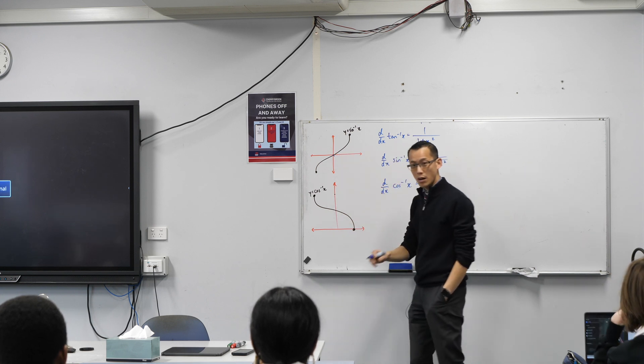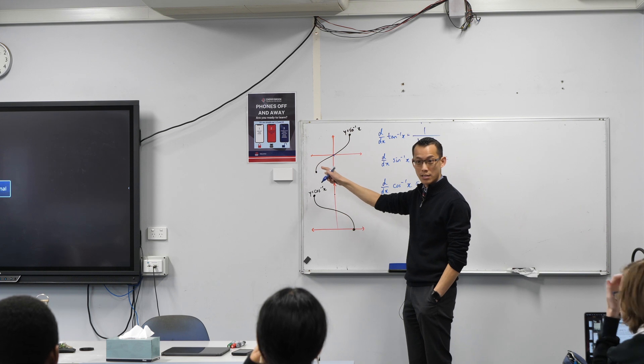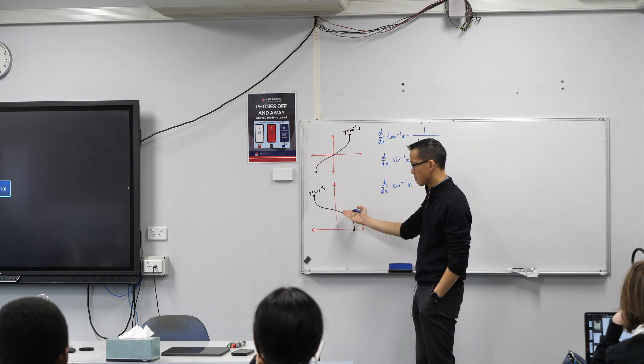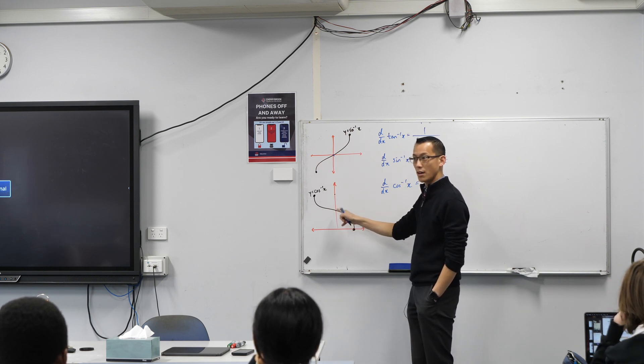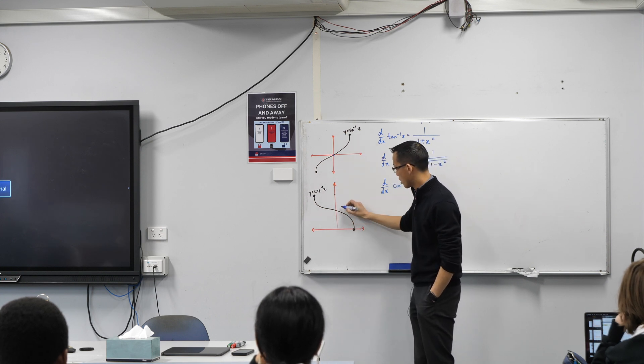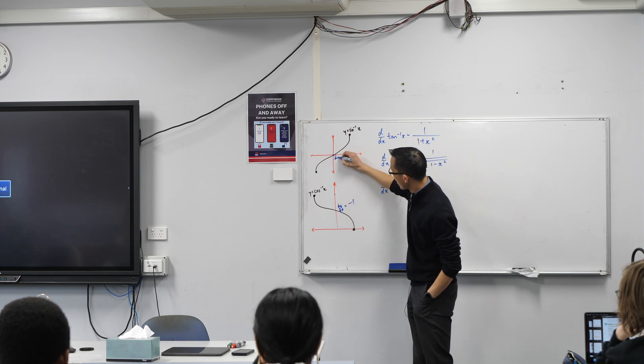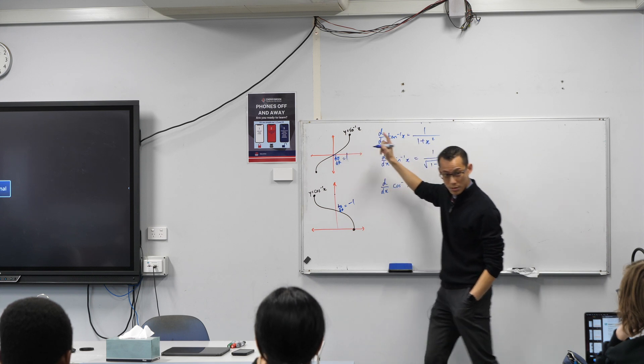You noted that at this spot here, when x equals 0, that gradient there, the tangent, should be gradient 1. What does that gradient look like right there? Minus 1, right? Still at x equals 0. So if I went dy/dx here equals negative 1 and dy/dx here equals positive 1.